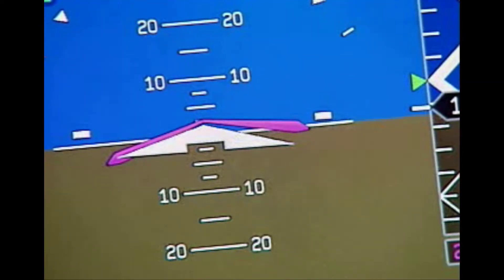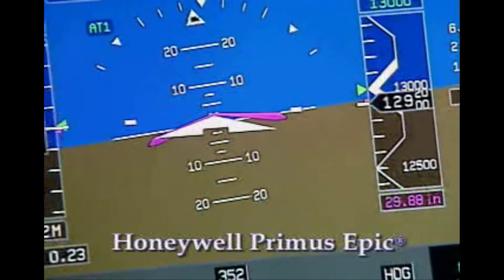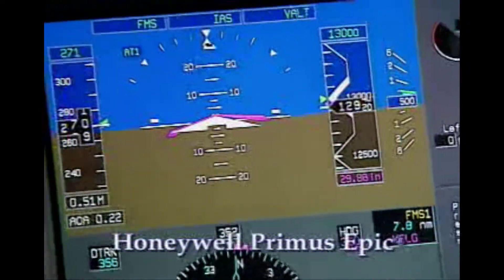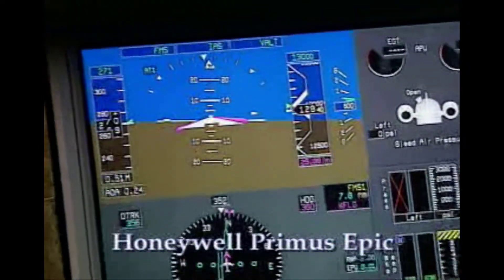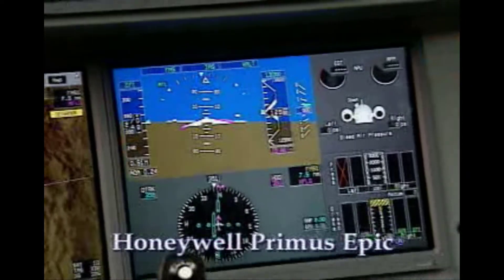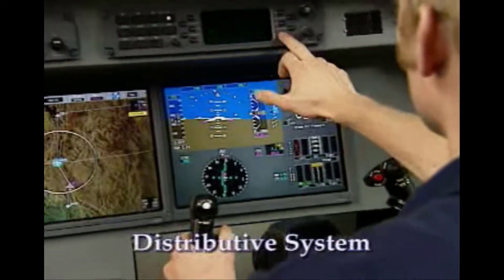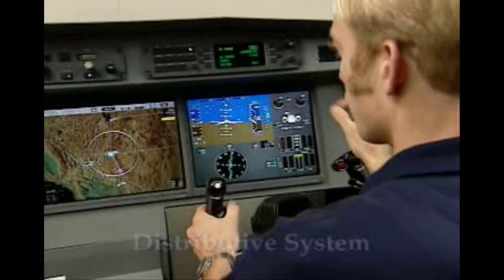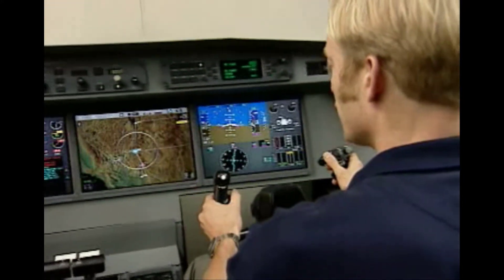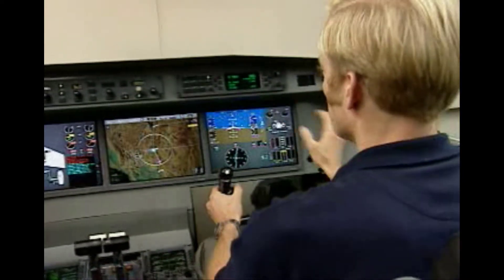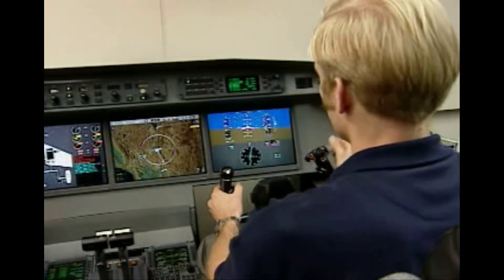In contrast, Honeywell's new Primus EPIC system utilizes modular architecture to provide an unprecedented level of functional and physical integration capabilities in a single cabinet. Referred to as a distributive system, MAU module processors utilize software that delivers multiple functions, allowing the hardware design to be lighter and require less space than the Primus 2000.